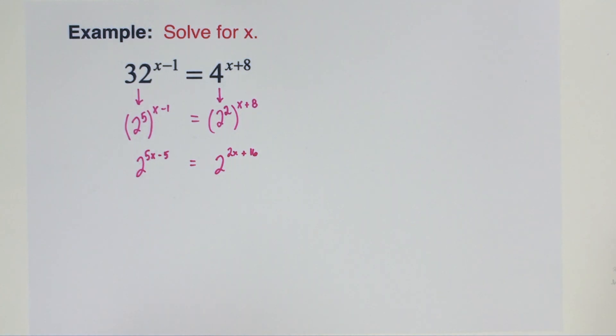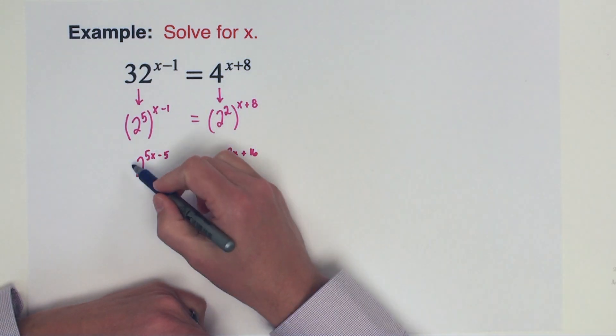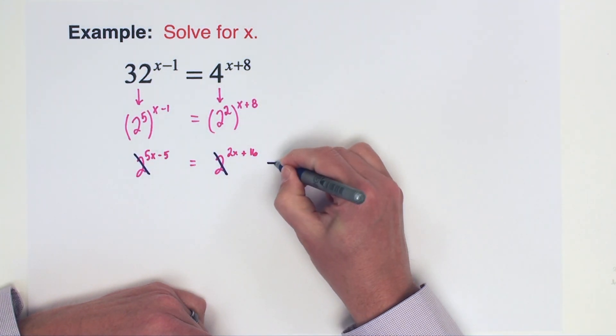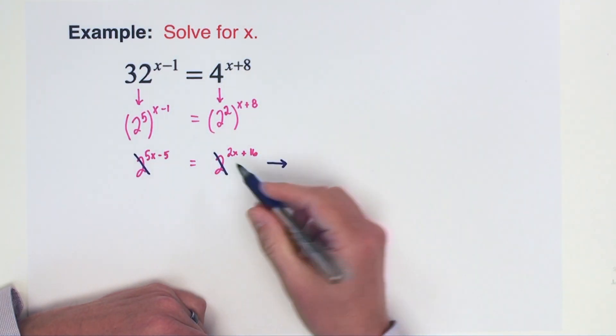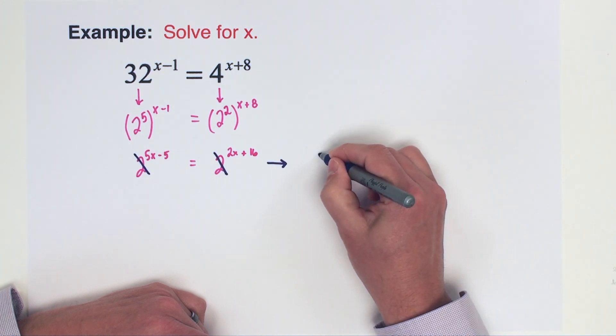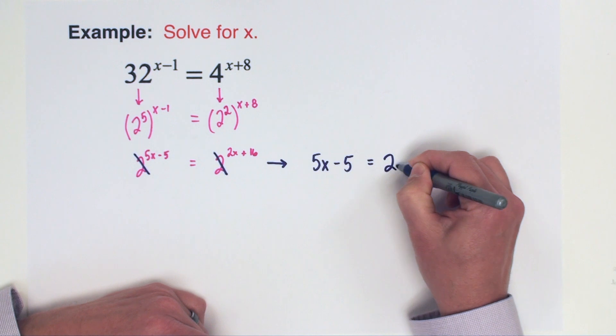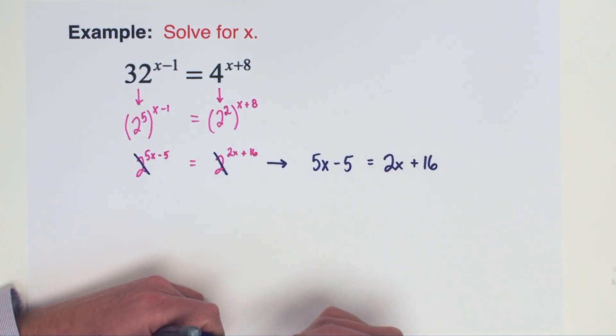Next, before I remove the bases, I'm going to go ahead and combine the powers on both sides. Since they are powers raised to powers, we're going to multiply, so this is going to become 2 raised to the 5x minus 5 equals 2 raised to the 2x plus 16. Like in the last problem, once we get to this stage, we can take this common base of 2 and we can remove it from the problem and then just work with the exponents equal to each other.